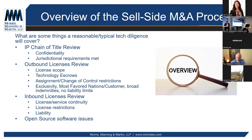Another area to expect questions on is outbound licenses, particularly if you have technology and assets that you license out to third parties as a revenue-generating exercise. Questions include license scope — did you provide an overly broad license that would prevent the buyer from monetizing that customer in the future? Is it a perpetual versus subscription license? Is it non-exclusive or exclusive? Is it terminable or non-terminable? These are all things the buyer will want to look at to make sure contracting processes reflect the business model.